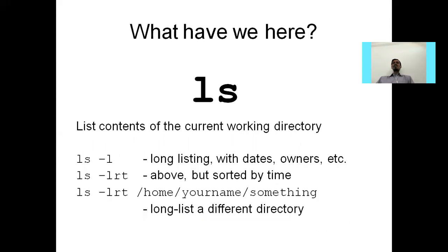The next command is the ls command — 'What have we here?' ls is a list command that lists the contents of the current working directory. If you want to know the files and directories in your current working directory, you can use ls. There are some options: ls -l means long listing. If you want details about files and directories like dates, owners, and permissions, you can use ls -l.